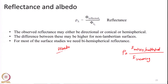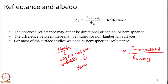Albedo is defined as the case of reflectance in which the outgoing — specifically the reflected — radiation is integrated over a hemisphere surrounding the object of interest. We call it hemispherical reflectance. So with respect to the outgoing reflected radiation integrated over a hemisphere, this is what we call albedo.